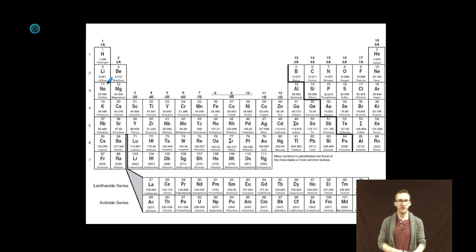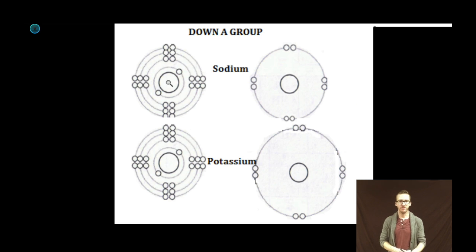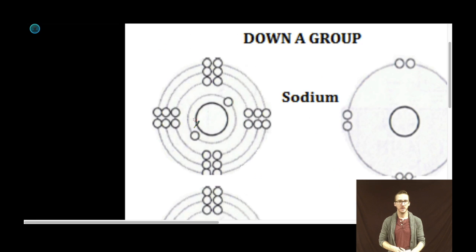As I locate those two elements in my periodic table, notice that they are both alkali metals in my first group on the periodic table. Now the first thing I'm going to do is build a couple of traditional models of an atom of sodium and an atom of potassium.